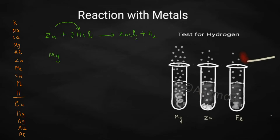Write one more example. You are taking magnesium ribbon and adding that into dilute hydrochloric acid. The position of magnesium is above hydrogen in the reactivity series, so it is capable of displacing hydrogen from the acid. You will be getting magnesium chloride, and hydrogen gas will be produced.